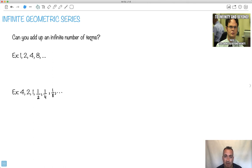Can you add up an infinite number of terms? In the past I've been showing you how to add up different terms. Let's see what happens if it's geometric. Geometric, remember, means you multiply by the same number. In this case, this is a geometric sequence where the first term is 1 and the ratio is 2 because I'm always multiplying by 2.